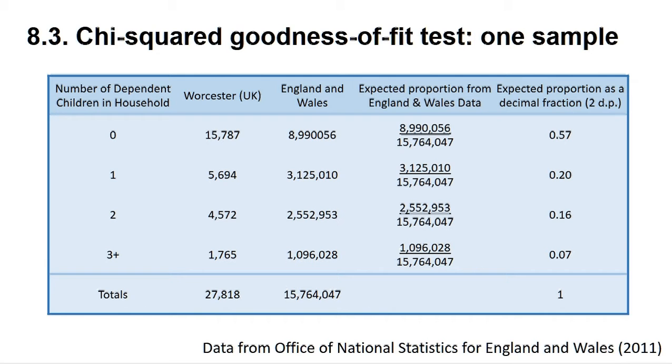City councils often need such data to plan expenditure for the future and one of the questions that can be asked is if Worcester is typical of England and Wales in general. The figures from England and Wales are given in column 3 and in column 4 we can express this number as a fraction that gives the proportion of the cases in each group. In column 5 we express this fraction as a decimal. These are our expected proportions.